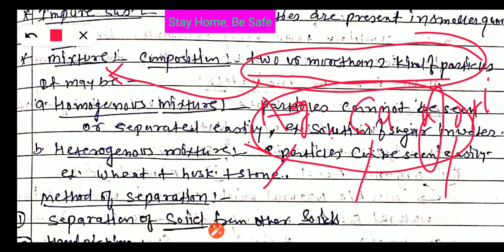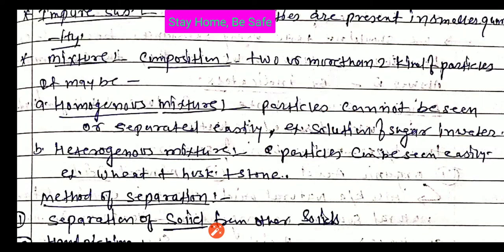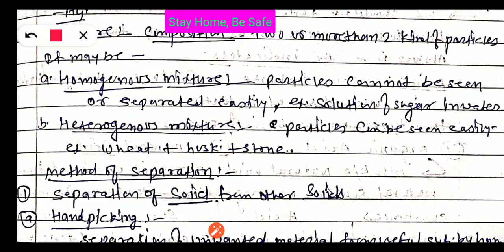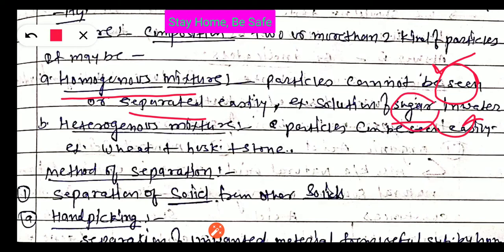Mixture composition is not fixed. There are basically two categories of mixtures. The first one is a homogeneous mixture. Homogeneous mixture means the particles of the mixture cannot be seen easily or cannot be separated easily — they are mixed properly. For example, sugar dissolved in water: after stirring, you are unable to see the particles of sugar.